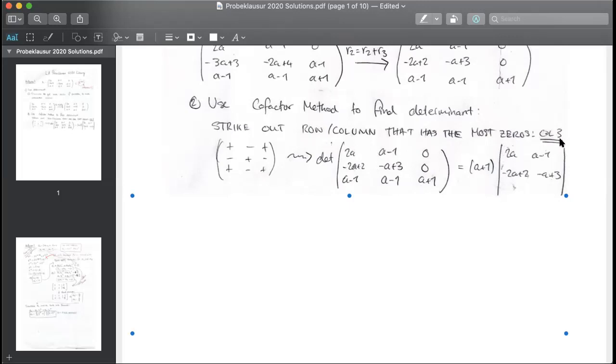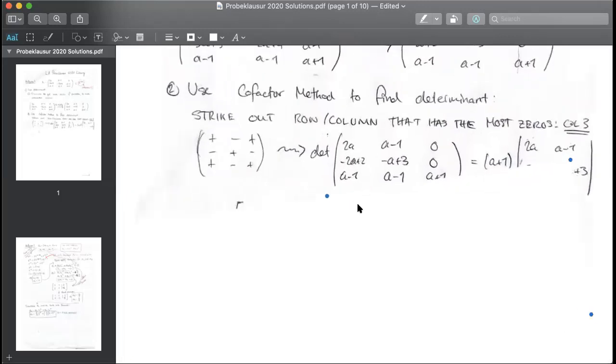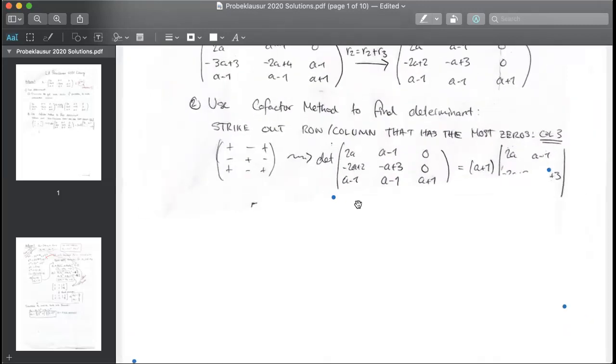That's what the straight lines here mean. It's another notation. Instead of writing det, you can write it with a straight line. It also means determinant. So in effect, the determinant of this big matrix is just a plus one times the determinant of the lower matrix. The determinant of the lower matrix is easy to find because we can use the cheat rule for two by two matrices.